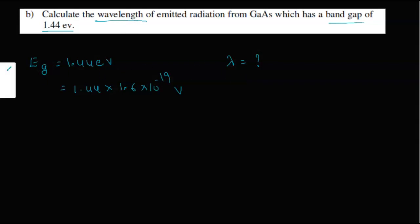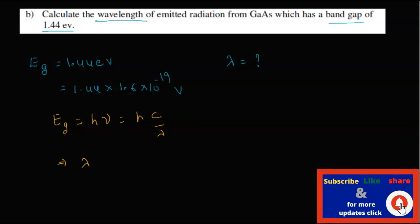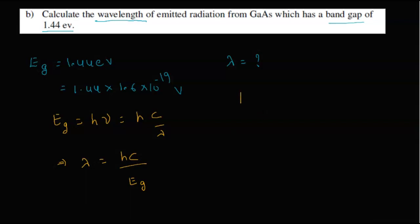According to Planck's radiation, we know that energy band gap Eg equals h nu, where nu means c by lambda. We have to calculate lambda, so lambda equals hc by energy band gap.